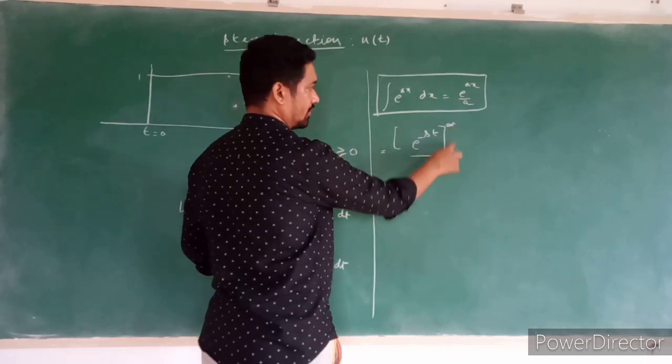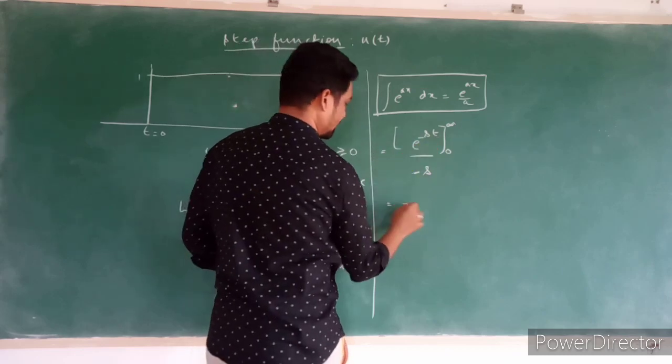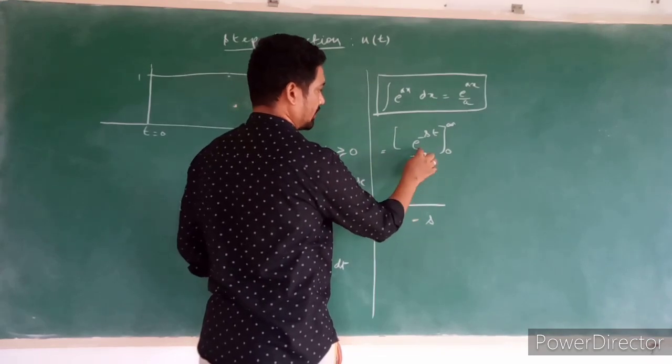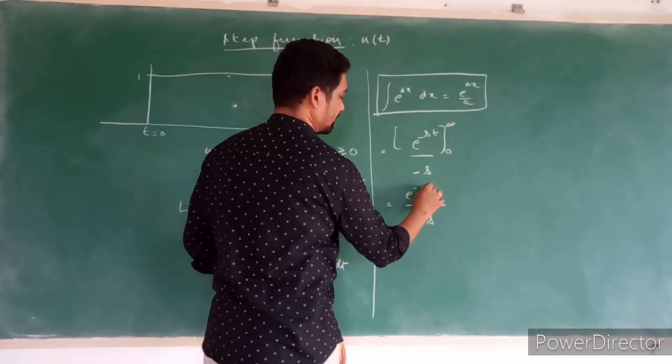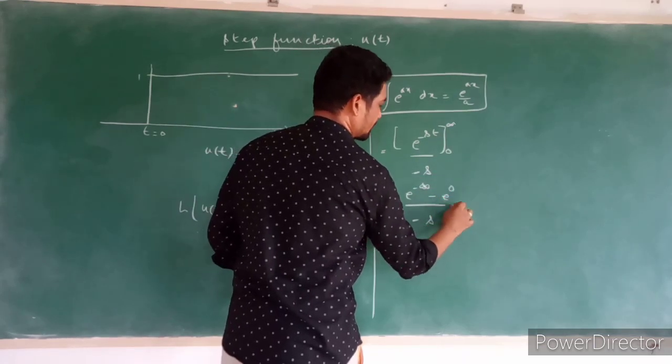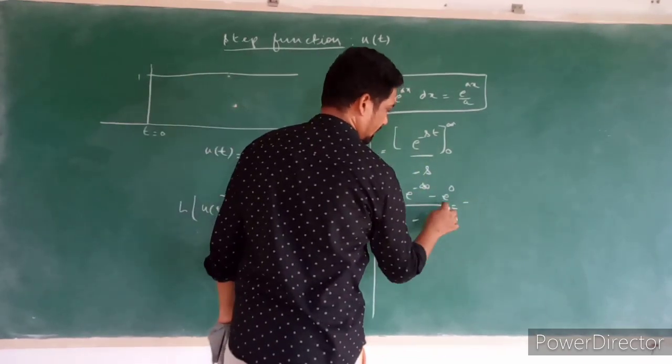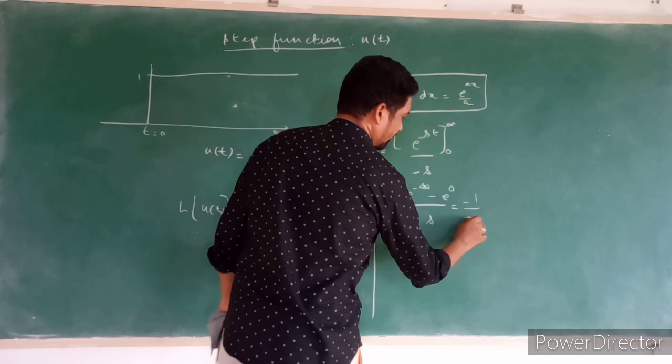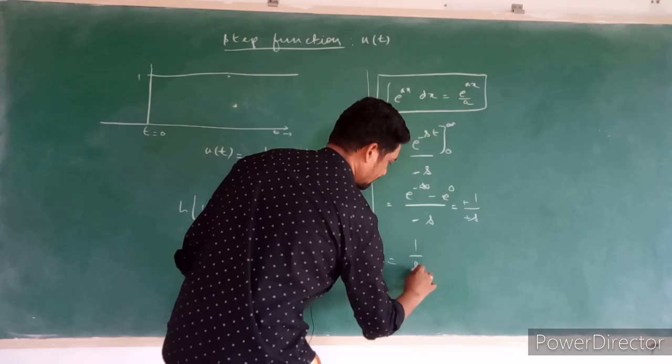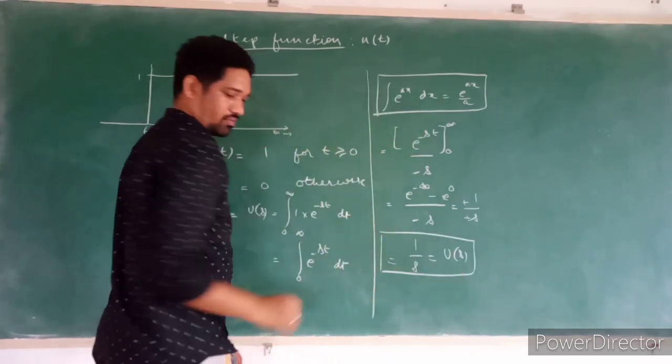So plugging in the values of limits, what we have is minus s in the denominator. We'll be having e raise to minus infinity for the upper limit minus e raise to 0. E raise to minus infinity will be 0. So minus e raise to 0 will be 1 by minus s. This negative gets cancelled, we have 1 upon s which is equal to u(s). This is the Laplace transform of a step function.